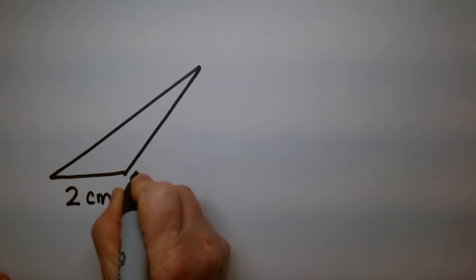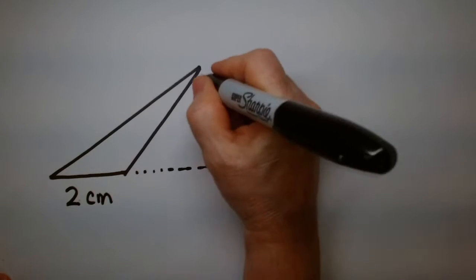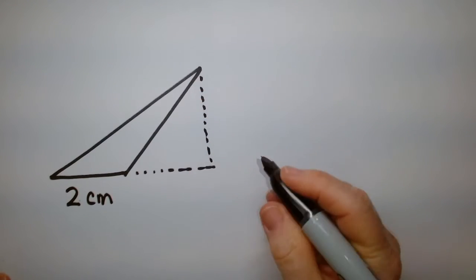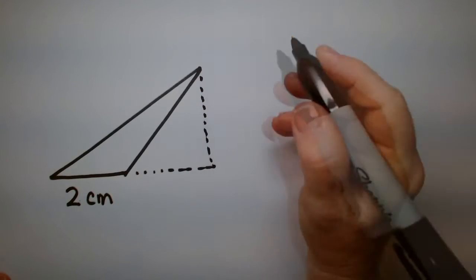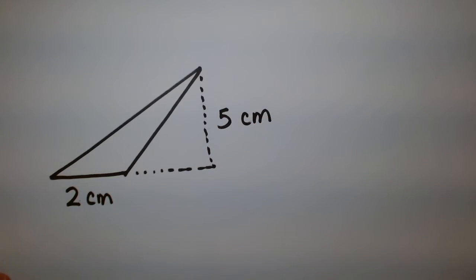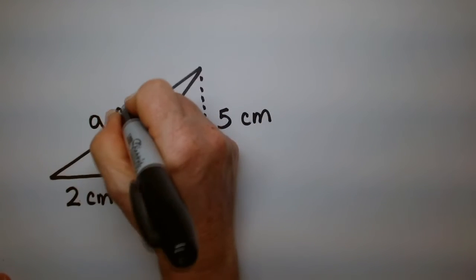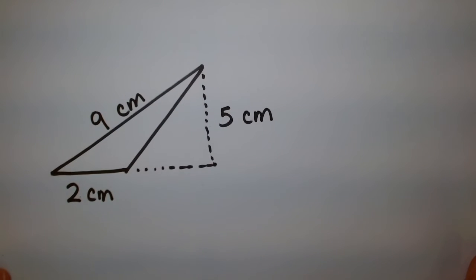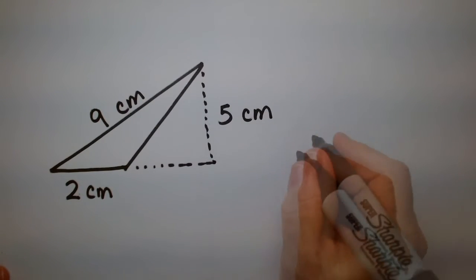What about a triangle like this? If this is 2 centimeters, and I tell you that the height from here to here is 5 centimeters, and this is 9 centimeters. Can you tell me how to do this one? All right. Let's do it together.